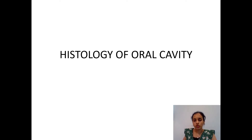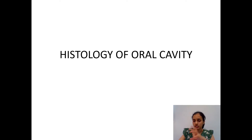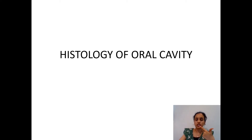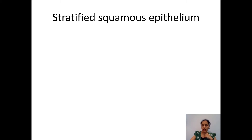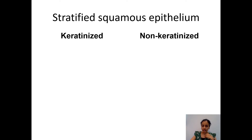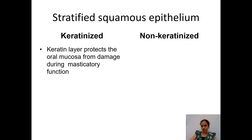Starting with the histology of the oral cavity — since food first passes through it — the oral cavity contains the tongue, lips, teeth, gums, hard palate, soft palate, then leads to pharynx and esophagus. The oral cavity is mainly lined by stratified squamous epithelium, which is keratinized in certain regions and non-keratinized in other regions.